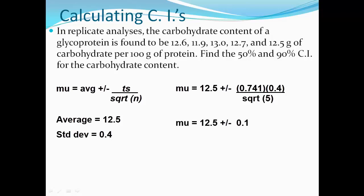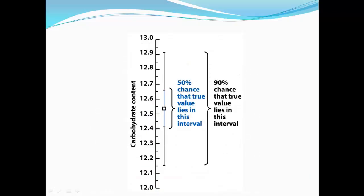Plus or minus 0.1. So what does that mean? That means that there is a 50% chance that the true value lies within that interval that you just calculated. So the value could lie anywhere between 12.4 to 12.6.